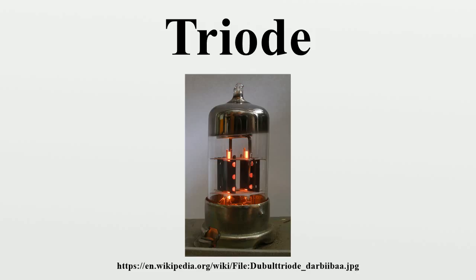The triode was immediately applied to many areas of communication. Triode continuous wave radio transmitters replaced the cumbersome, inefficient damped wave spark-gap transmitters, allowing the transmission of sound by amplitude modulation. Amplifying triode radio receivers, which had the power to drive loudspeakers, replaced weak crystal radios which had to be listened to with earphones, allowing families to listen together. This resulted in the evolution of radio from a commercial message service to the first mass communication medium.